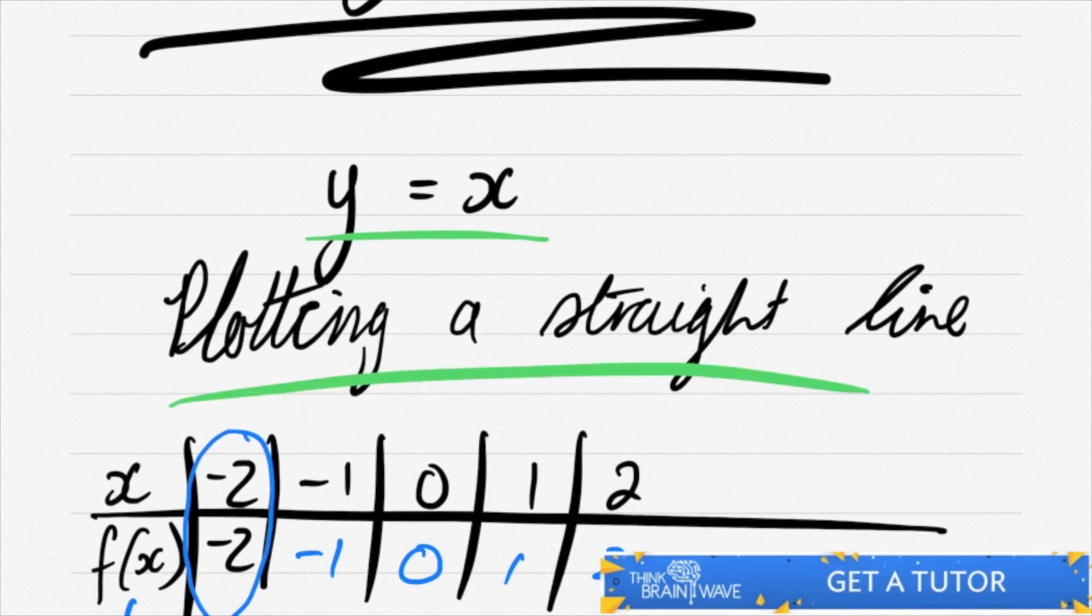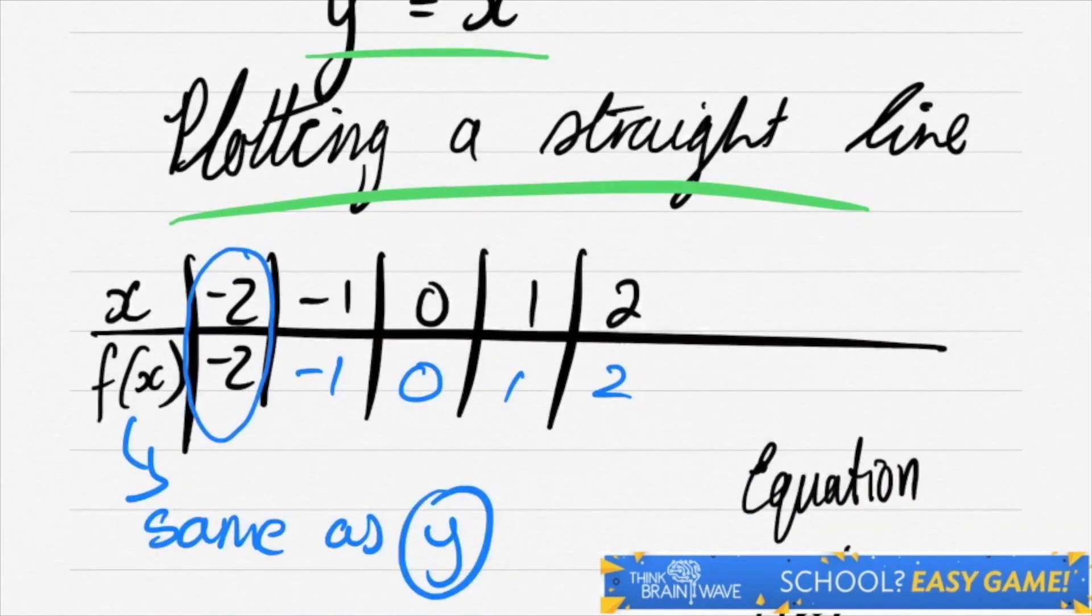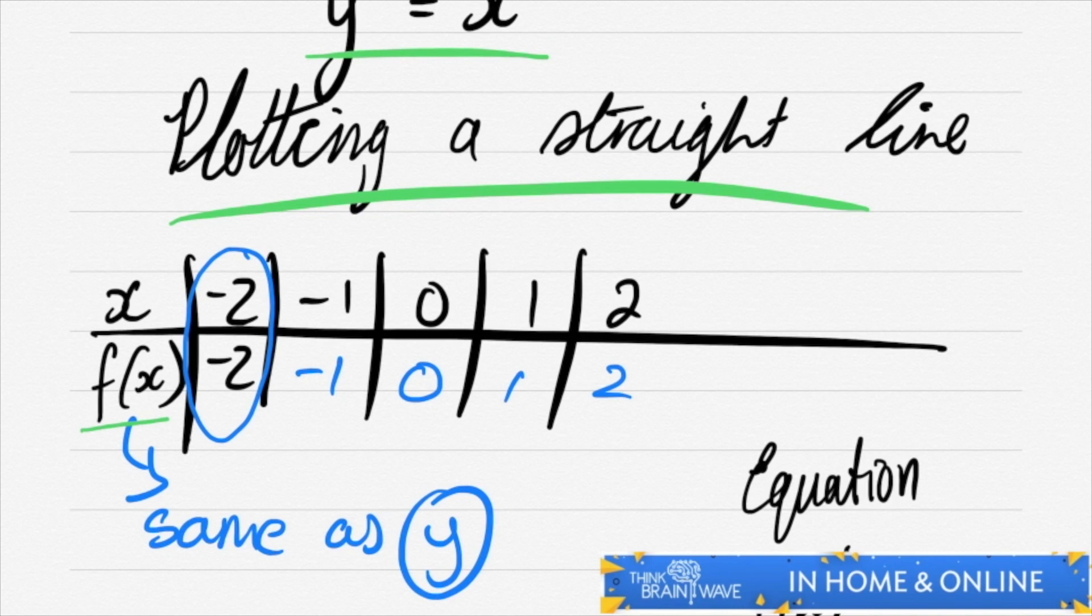So let's talk about making a straight line. If you have x is equal to minus 2, you'll have y is equal to minus 2. So let's just establish this quickly.